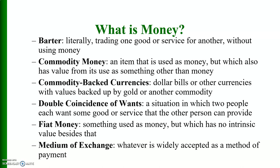Starting with the definition of money: historically, before money was invented, barter trade was used, in which goods were exchanged for goods. Then there was commodity money, in which an item was used as money but which also had value from its use as something other than money. We had commodity-backed currencies, for example dollar bills backed by gold or another commodity. A problem with the barter system is the double coincidence of wants — a situation in which two people each want some good or service that the other can provide.